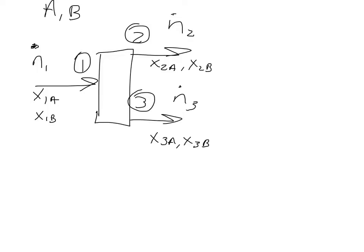And there are three different equations that we could write out for this on the material balance. There's the total, which is simply N1 equals N2 plus N3. We could write out an A balance: N1 times x1A equals N2 times x2A plus N3x3A.